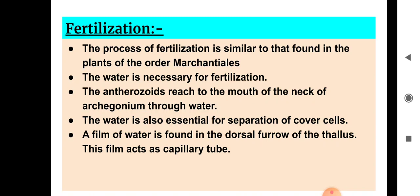The film of water found in the dorsal furrow of the thallus acts as a capillary tube. The cover cells dissolve and water helps separate them. Through this capillary action, water flows along the dorsal furrow and the antherozoids travel along with it.